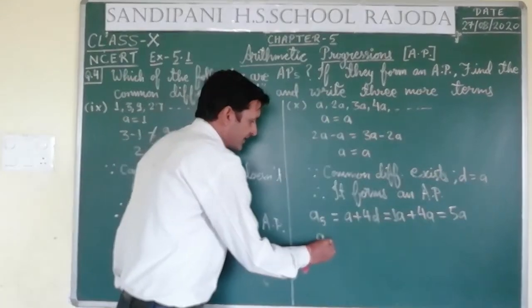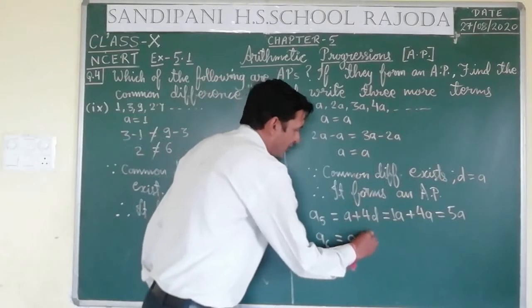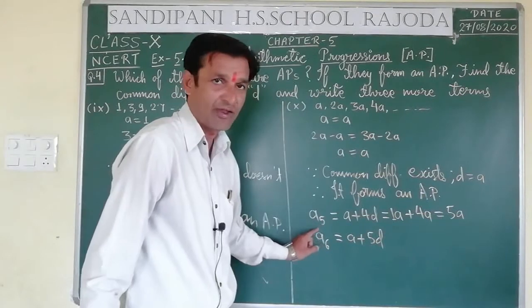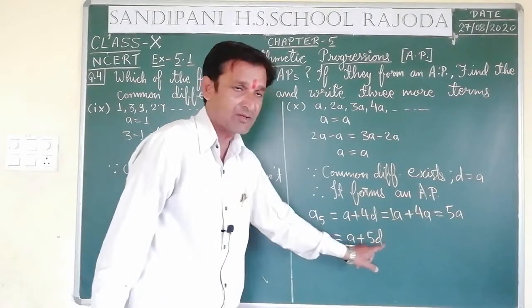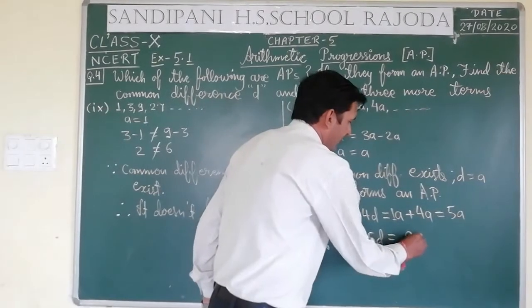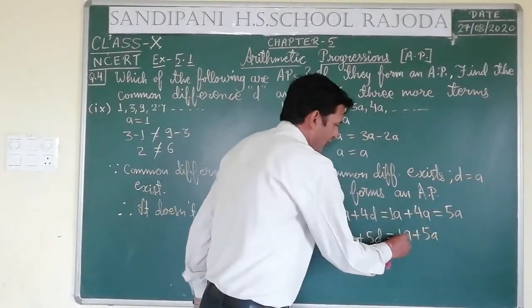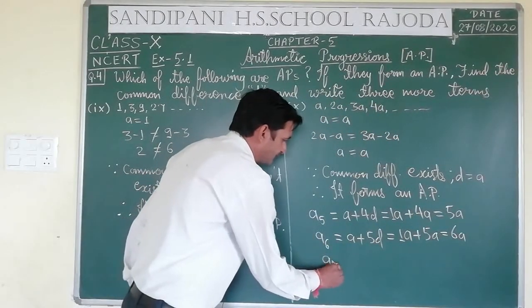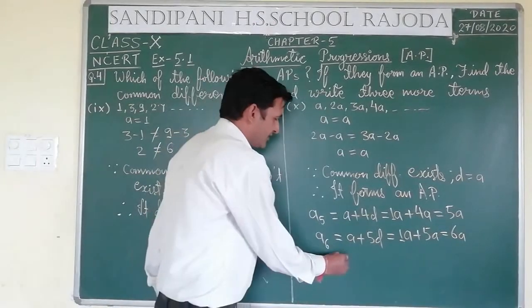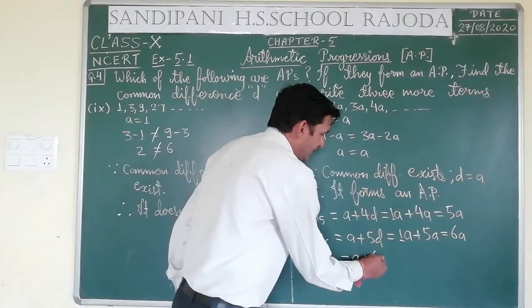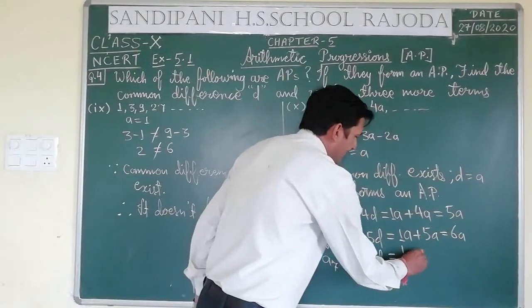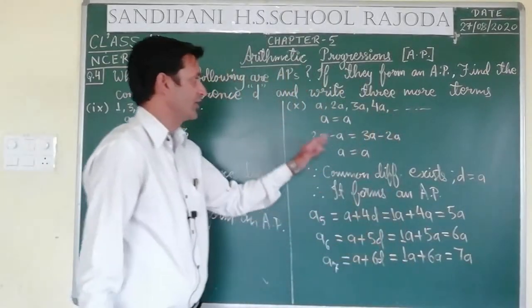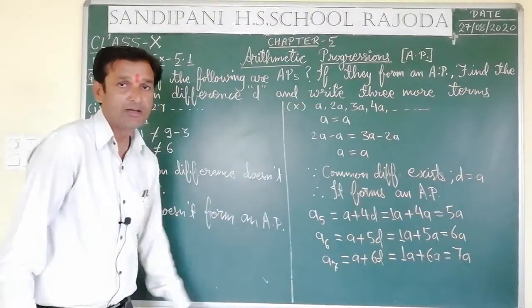A7 = A + 6D = A + 6A = 7A. So the next three terms are 5A, 6A, and 7A. Questions 9 and 10 are now complete.